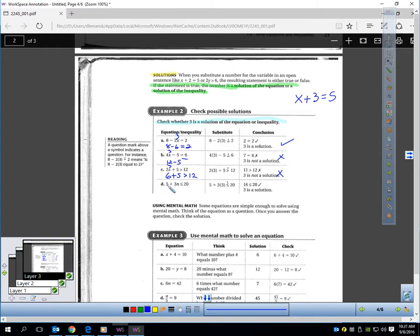And then this last one, is 5 plus 3n less than equal 20? Is 3 a solution? Well, let's plug in 3. I've got to multiply before I add. So, 3 and 3 is 9. I've got 5 plus 9 less than equal 20. Let me see. 5 plus 9 is 14. Is 14 less than or equal to 20? Yeah, it is. It is less than. So, 3 is a solution.